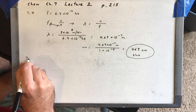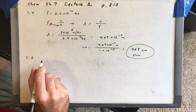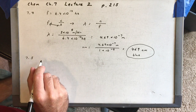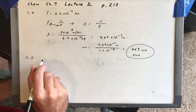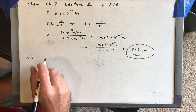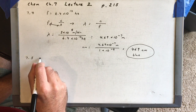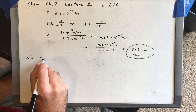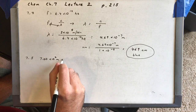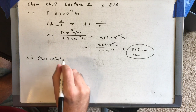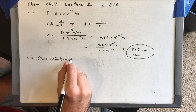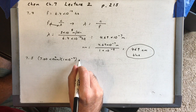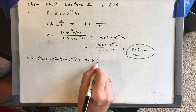Let's do problem 7.5. It says: if red light has wavelengths from 7 times 10 to the second nanometers to 6.5 times 10 to the second nanometers, what is the frequency range for red light? First of all, we need to change it from nanometers to meters. So 7 times 10 to the second nanometers — to change that to meters, you multiply by 1 times 10 to the minus 9, and that's going to be 7 times 10 to the minus 7 meters.